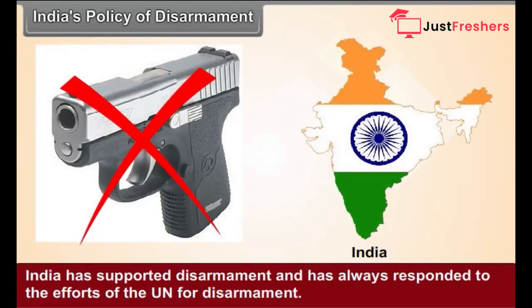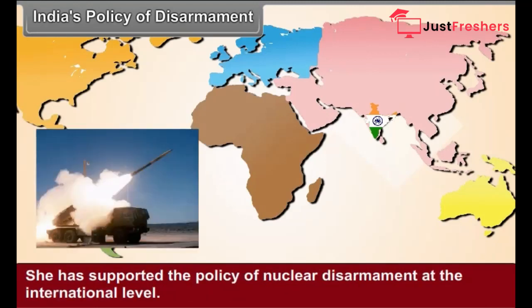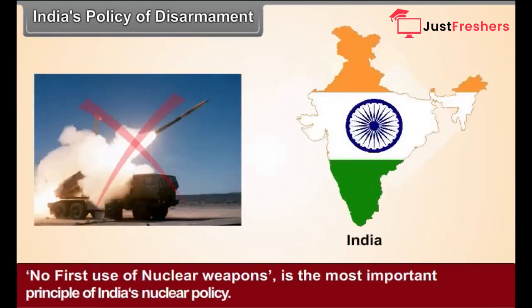India has supported disarmament and has always responded to the efforts of the UN for disarmament. India has a principled opposition to nuclear weapons because the world faces the threat of a nuclear war. She has supported the policy of nuclear disarmament at the international level. No first use of nuclear weapons is the most important principle of India's nuclear policy.